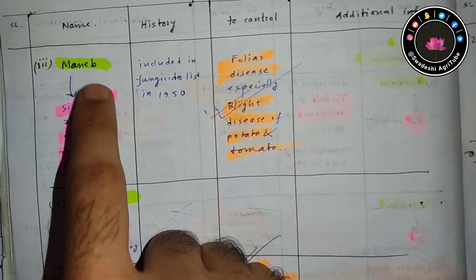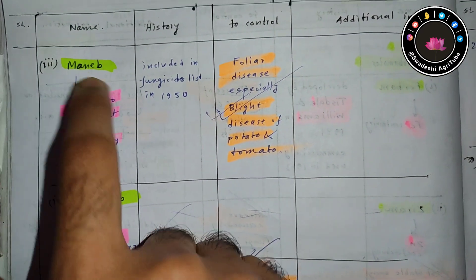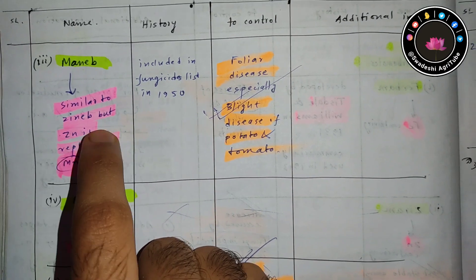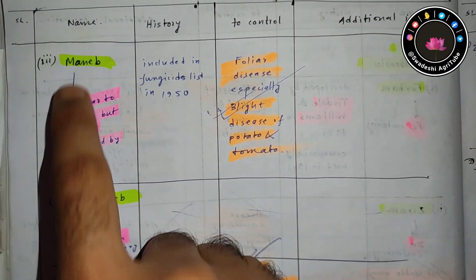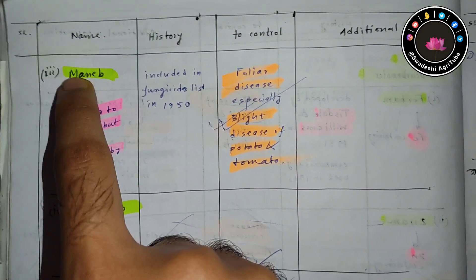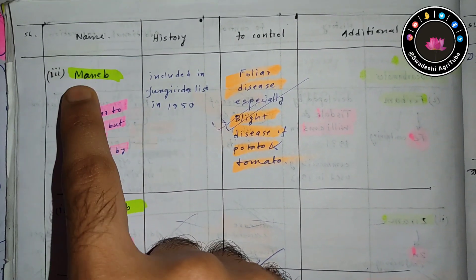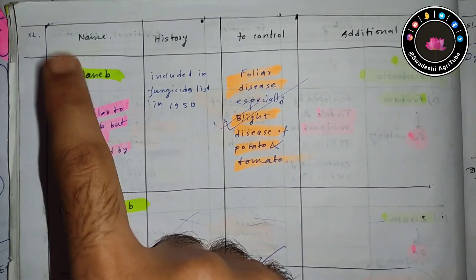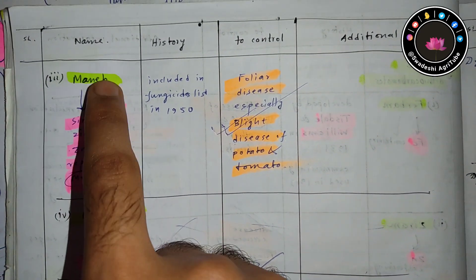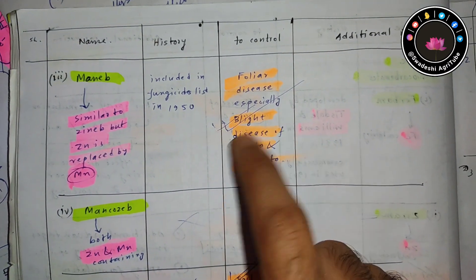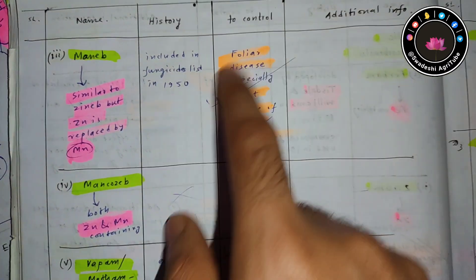The third is maneb. Maneb is just a brother of zineb because it is similar to zineb but zinc is replaced by manganese. In zineb there is zinc, but in maneb there is manganese. Maneb is used to control blight disease of potato and tomato. This is very important.